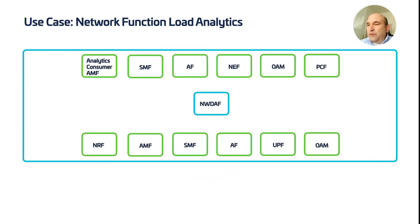Here we show the message flows and operations for the network function load analytics use case. It starts off with the access and mobility function making a request of the NWDAF in step 1 here in the diagram.